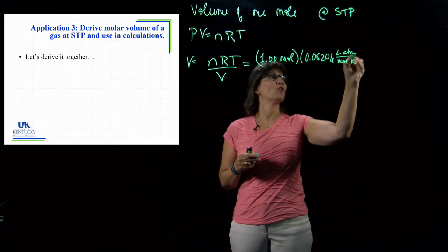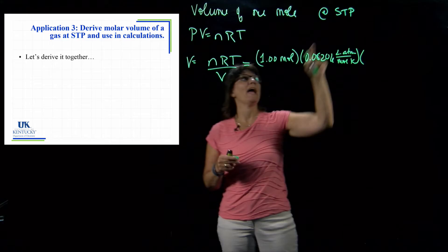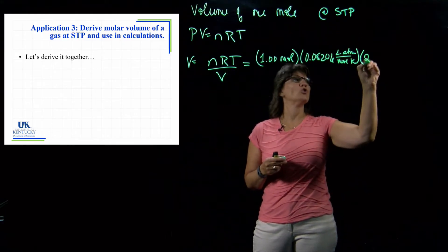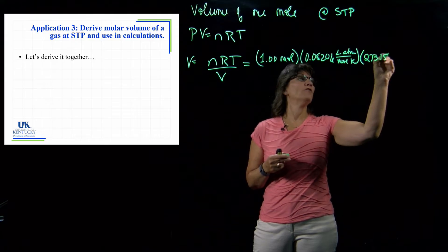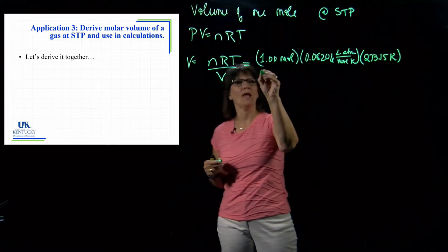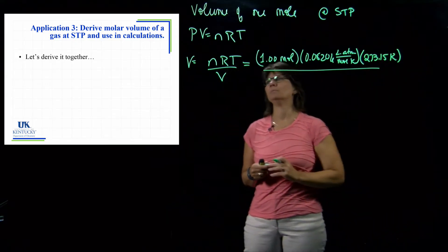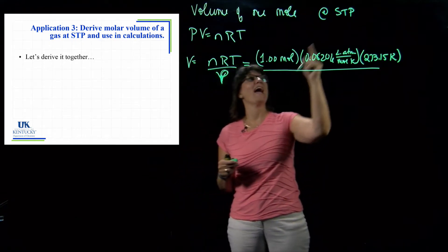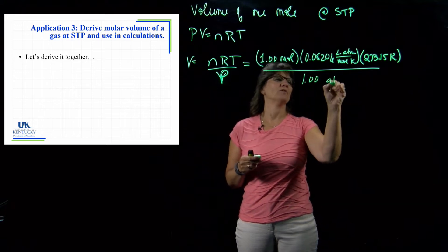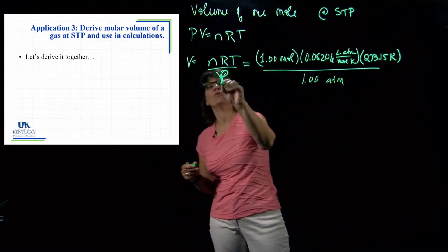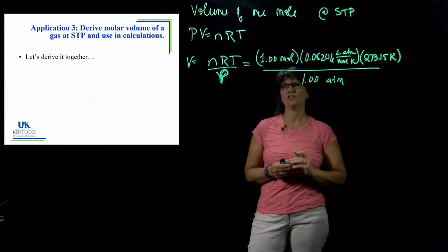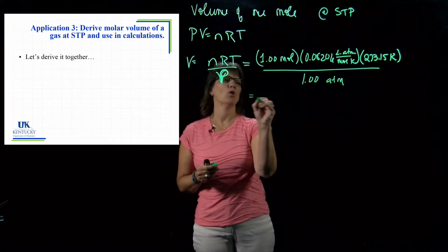The temperature at STP, the standard temperature, is zero degrees Celsius or 273.15 Kelvin. And P, the pressure at STP, is one atmosphere. Now we can put all these numbers into our calculator and we will get the molar volume.